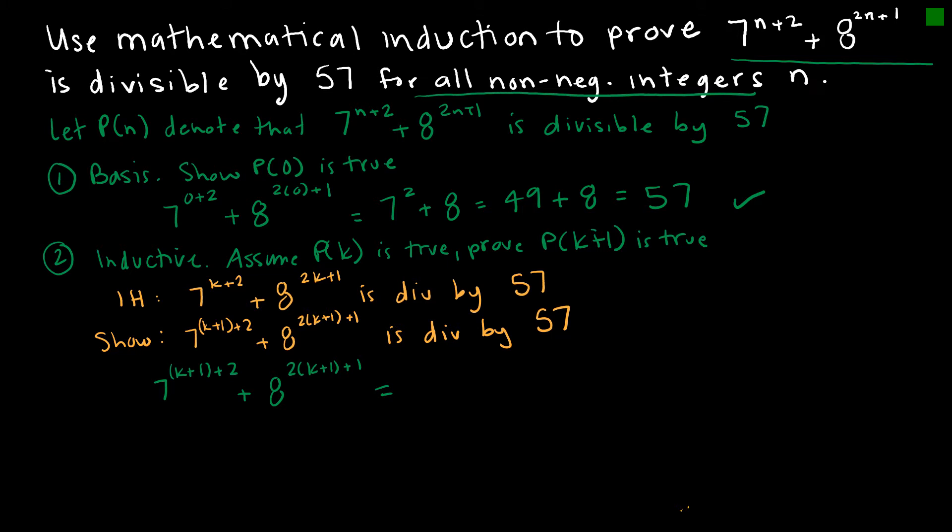What is that equal to? Well, essentially what I've done is by increasing k by 1, I took 7 times 7^(k+2). And by increasing k plus 1 here, what I did was because k was being multiplied by 2, I actually took 2 more 8's, so 8^2 times 8^(2k+1).